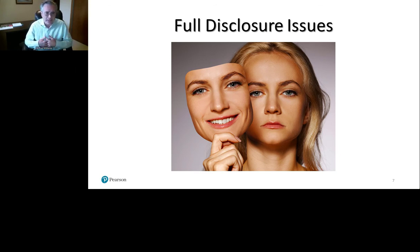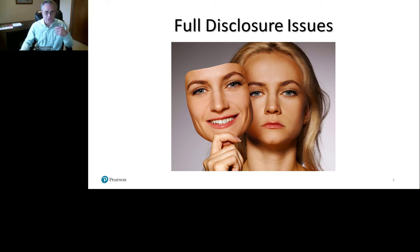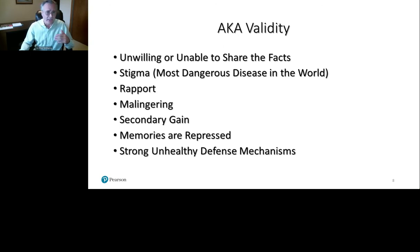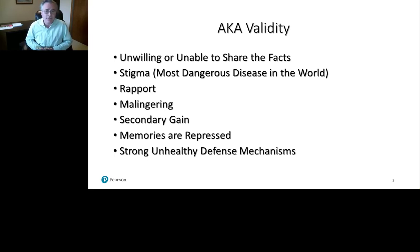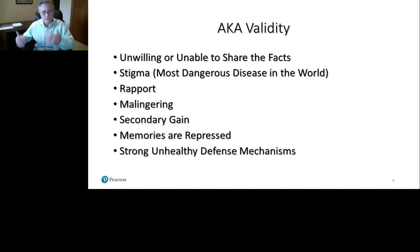Another thing affecting efficiency is full disclosure issues — patients come to us with difficulty disclosing, and there are a lot of reasons for that. Full disclosure issues, or validity concerns, are common in practice. Sometimes they're unwilling or unable to share the facts — this could be because of stigma, which I call the most dangerous disease in the world. Stigma has probably hurt more people and destroyed more qualities of lives than anything else, because with stigma you get holding back. You don't want to share it, so you try to live through it, and it just continues to destroy your life like a cancer.